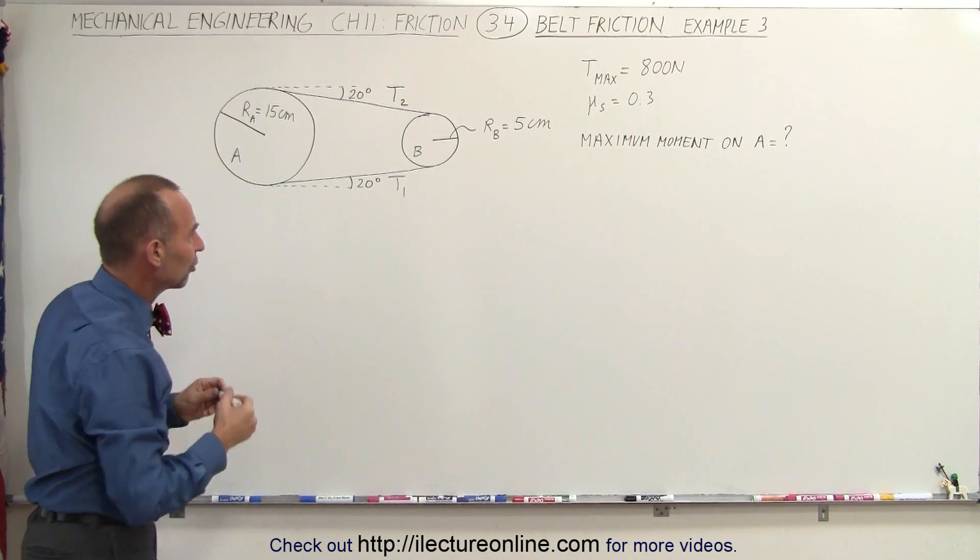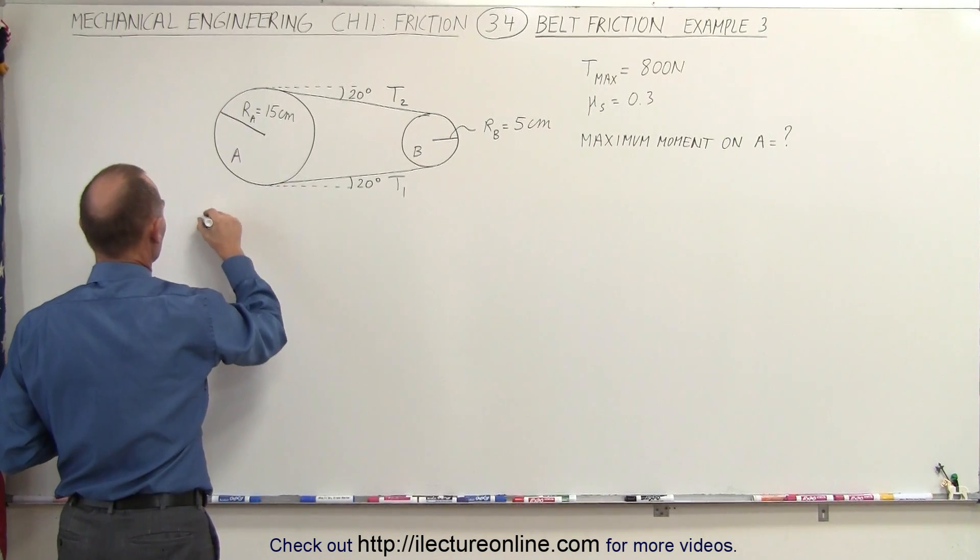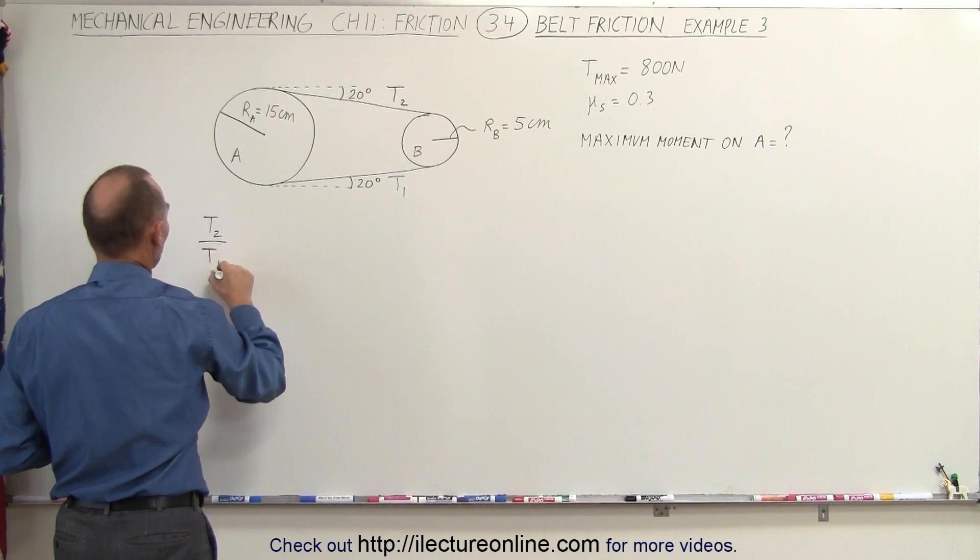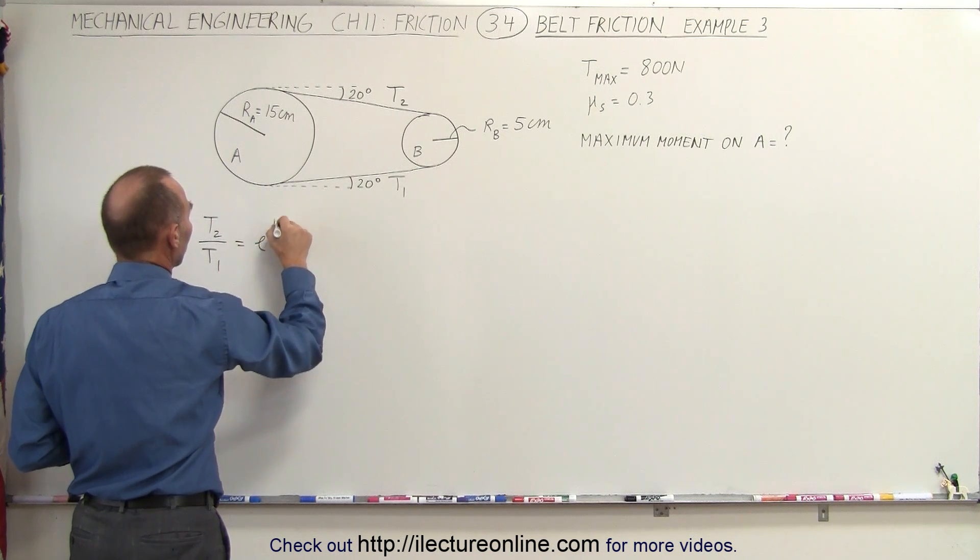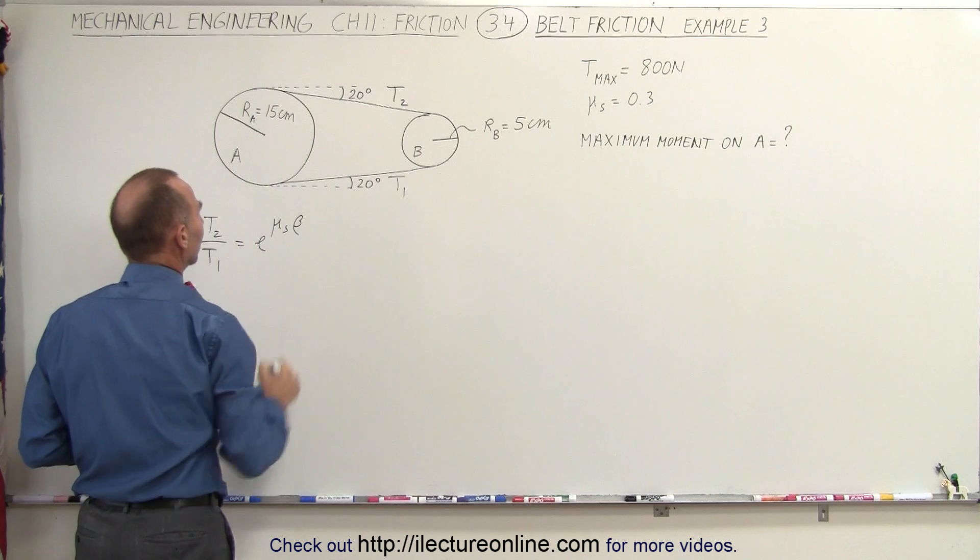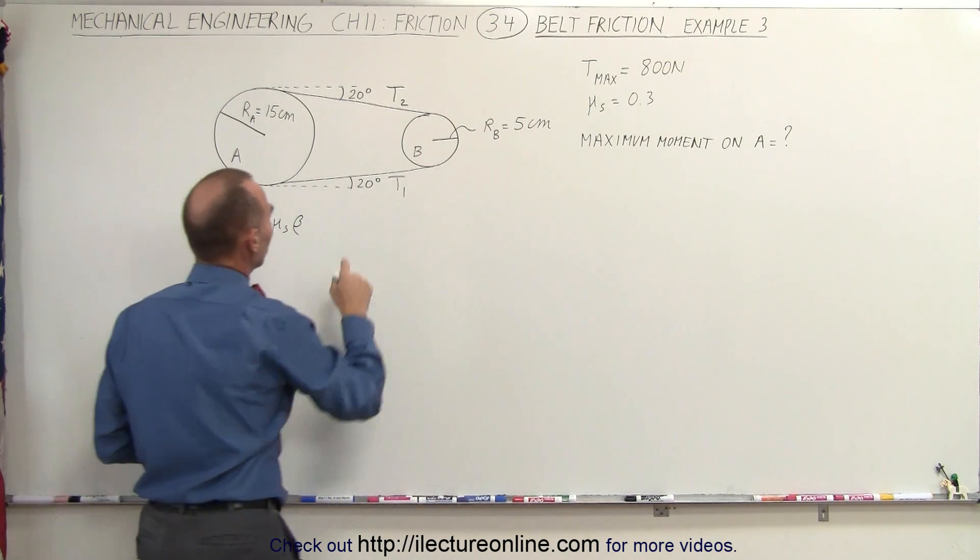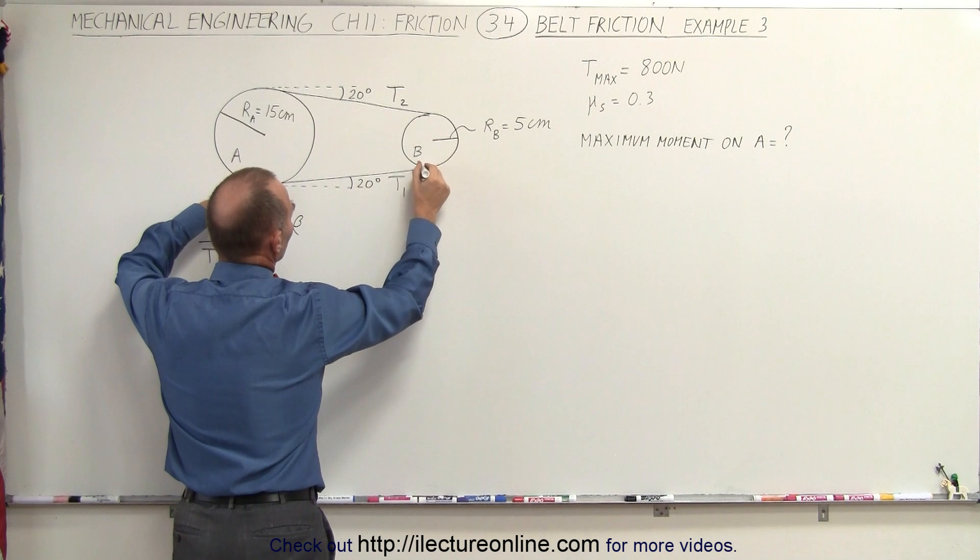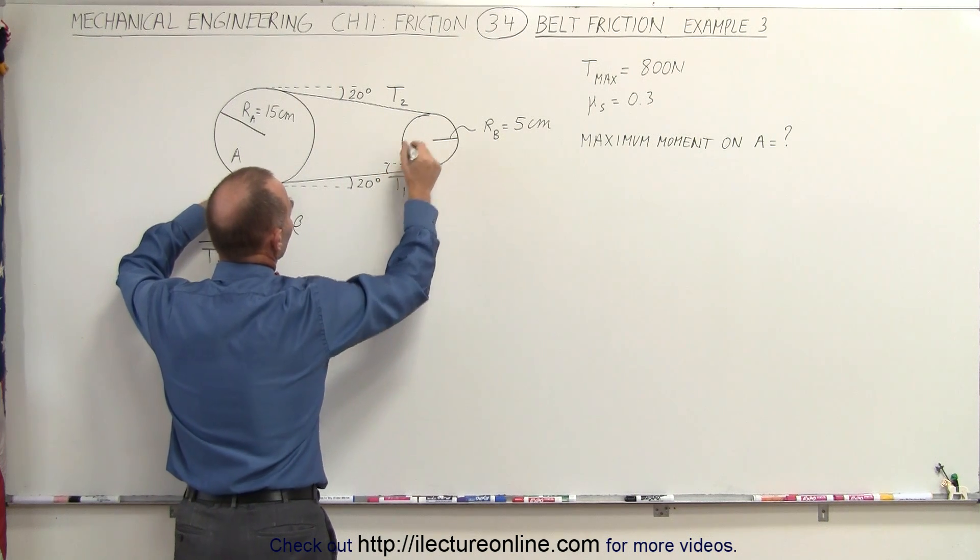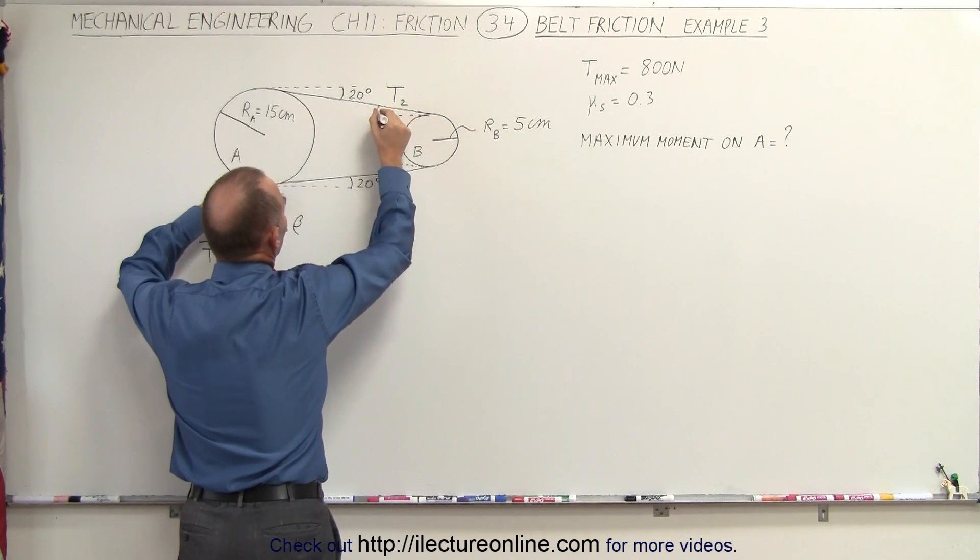Alright, let's go ahead and use our equation. We know that T2 divided by T1 is equal to E to the coefficient static friction times the angle of contact. Now notice if this is a 20-degree angle with the horizontal, we have a similar situation here. This must be a 20-degree angle here and a 20-degree angle there.